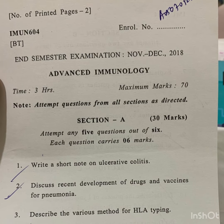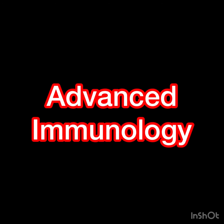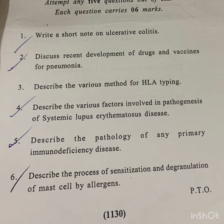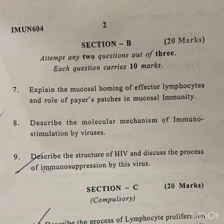The very first one is Advanced Immunology and the course code is IMMUNO 604. Because according to the subject code your syllabus may vary. So there are three papers: one is Advanced Immunology, the second is Immunology, and the third is Introduction to Immunology. According to your course code, go through these question papers.